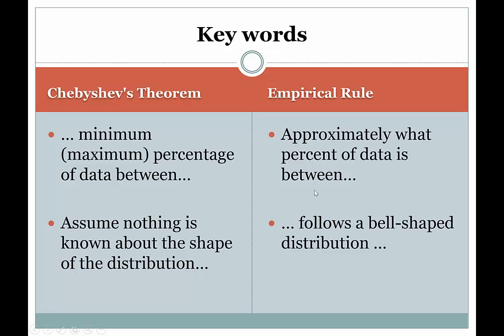The empirical rule talks about approximately what percent of the data is between two given numbers, so it uses the phrase 'approximately.' It doesn't talk about lower bounds because it gives approximate answers — look for that word. Both theorems ask about the percent of data between two numbers, but 'approximately' is pretty much only used with the empirical rule. Finally, empirical rule problems are a dead giveaway because they state that the data follows a bell-shaped distribution, a normal probability distribution, or describe it as symmetric and mound-shaped. That's a clear clue you should use the empirical rule.